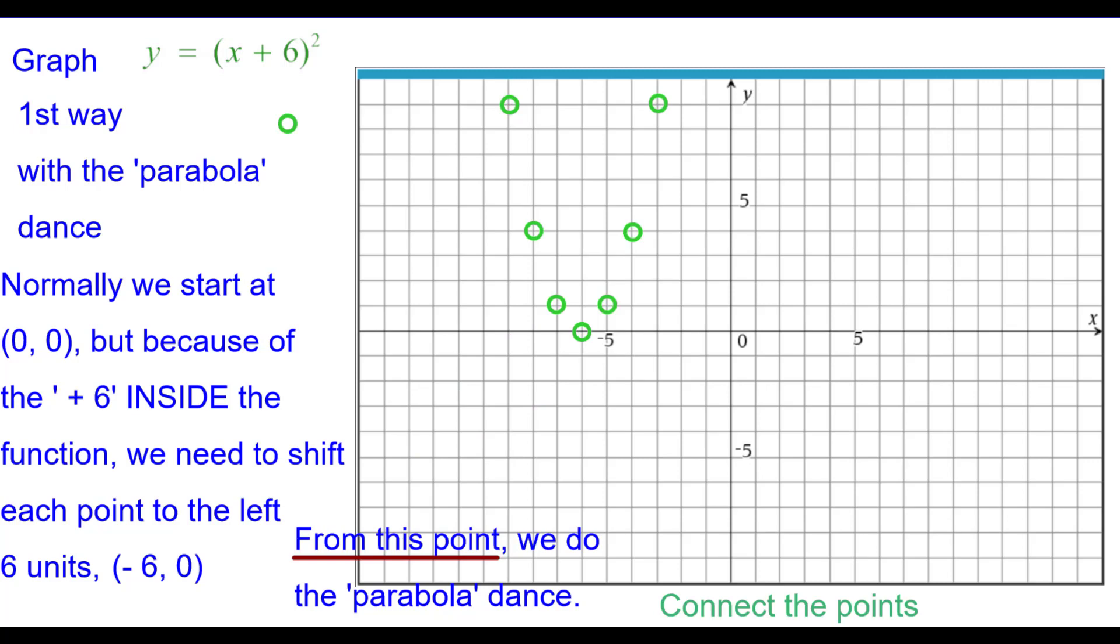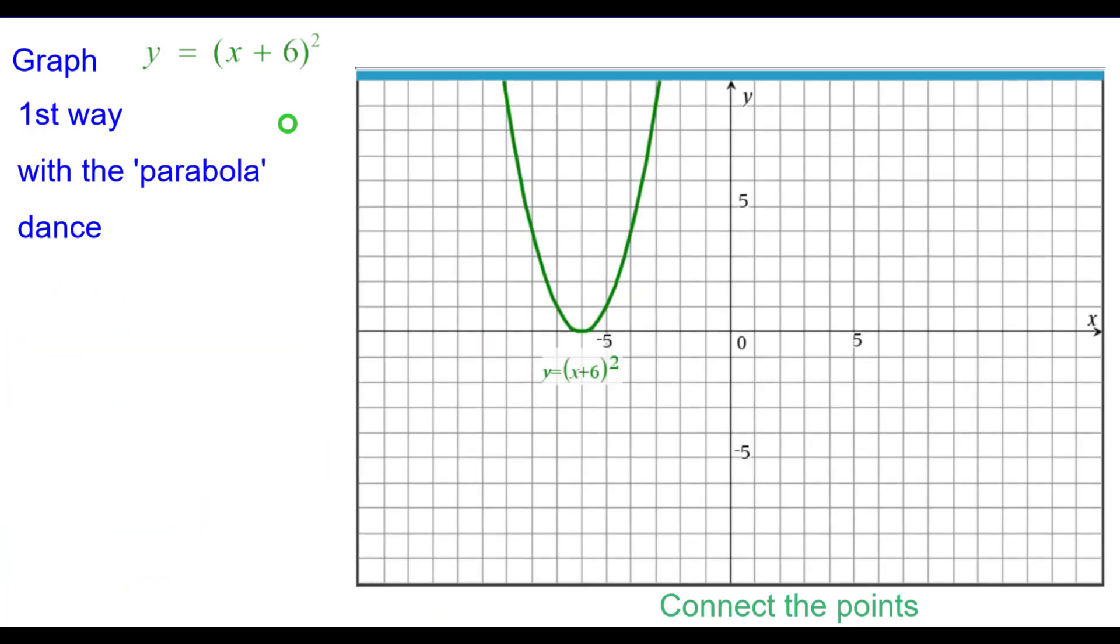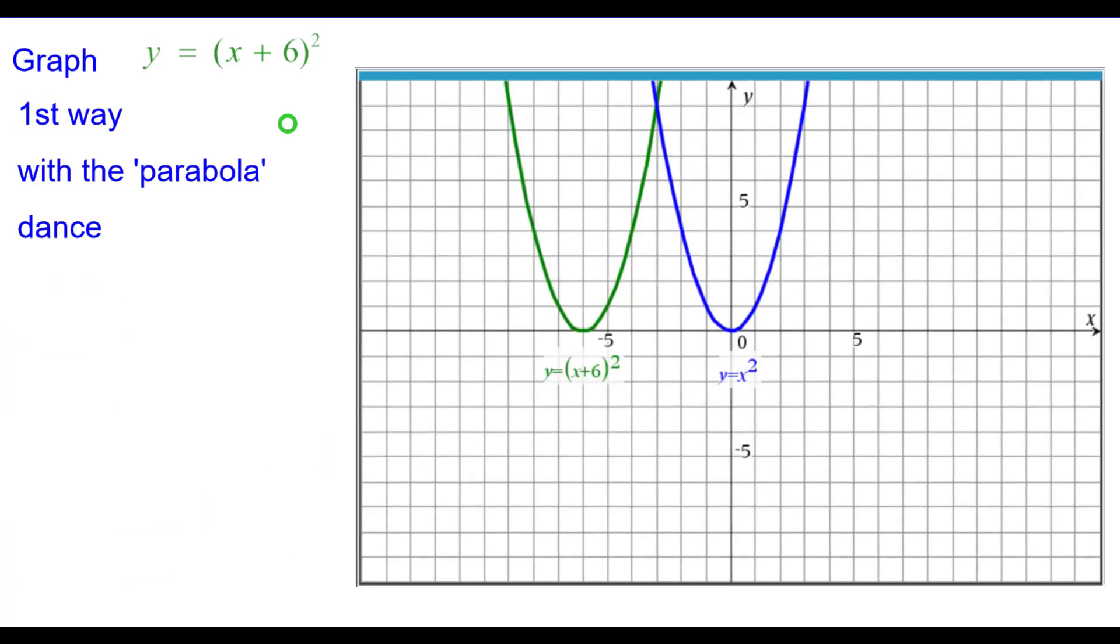Connect the points and we have the parabola. Comparing that to y equals x squared, the parent function, you can see that each point is moved to the left 6 units from the green to the blue, each point.